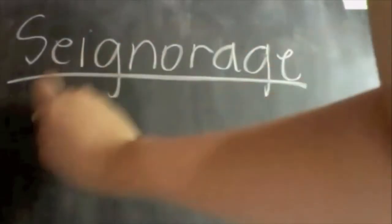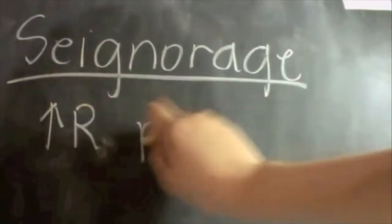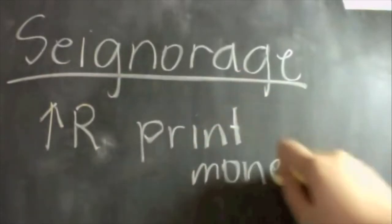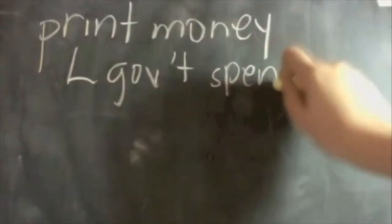Seigniorage is the profit made by a government through the increase in the amount of money in circulation, the monetary base. In terms of printing physical money, it costs the Treasury three pence to produce a £10 note, and the Bank of England sell this note at face value of £10 to commercial banks.